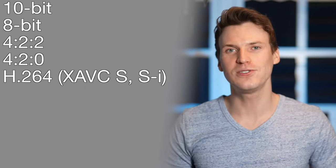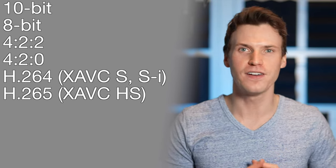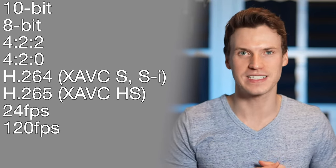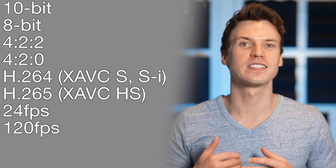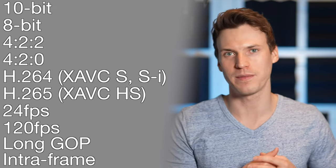The Sony a7IV has so many different video settings. There's 10-bit, 8-bit, 4:2:2, 4:2:0, H.264, H.265, 24 and 120 frames per second, as well as long GOP and intra-frame compression. Supplemental to the regular shooting modes, the a7IV also has a video setting called S&Q which includes in-camera time lapses and slow motion. S&Q has all the same options that regular movie mode does but it does not record audio.